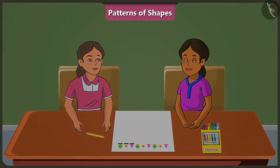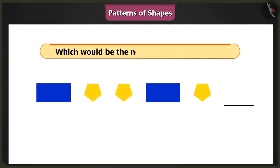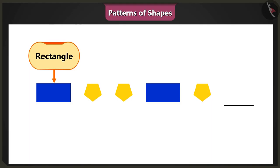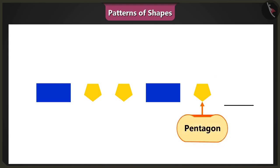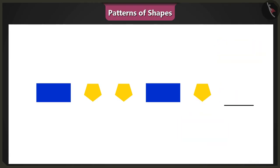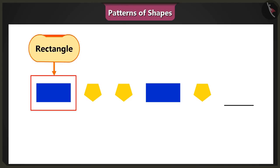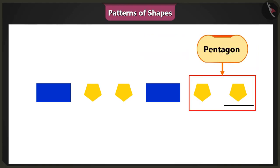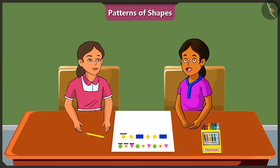Alright, now it's my turn to ask. In the given pattern, which shape will come next? In this pattern, a rectangle and a pentagon have been repeated. Therefore, the next shape in this pattern will be a pentagon followed by a rectangle. Oh, wait. Look carefully. In this pattern, one rectangle is followed by two pentagons. Yes, and we need to repeat this pattern. So, the next shape in this pattern will be a pentagon. This way we get a pattern of one rectangle and two pentagons. Yes, now you are correct.